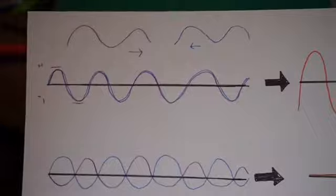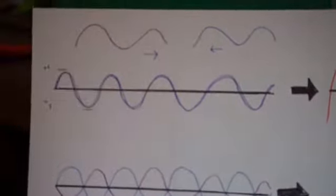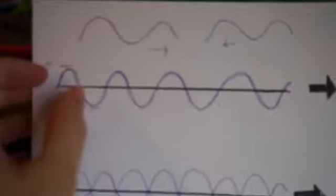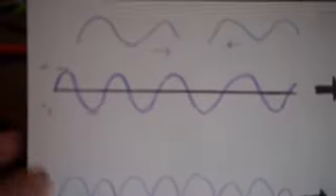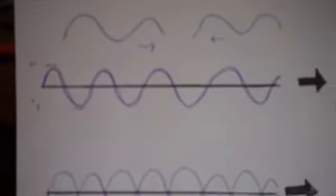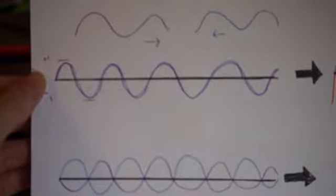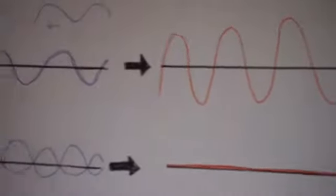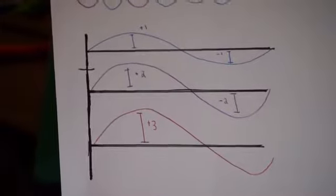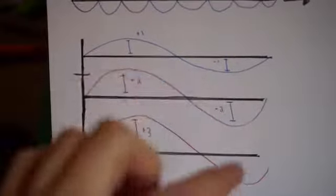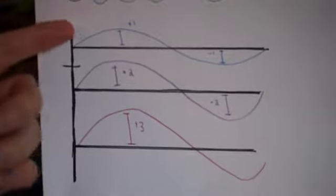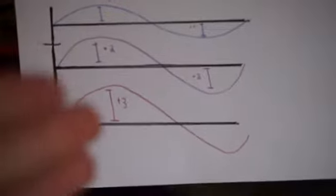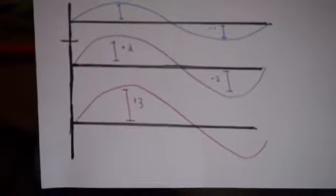Lastly, I'm going to be talking about constructive and destructive interference in waves. Let's say two waves — a blue wave and a purple wave — are coming toward each other. When they overlap so that the crests and the troughs of the waves are in the same spot, the amplitudes of the waves add — that is constructive interference. In this case the amplitudes would double. They don't have to have the same amplitudes; for example, if the purple wave has amplitude of two and the blue one has amplitude of one, the resulting wave has an amplitude of three.